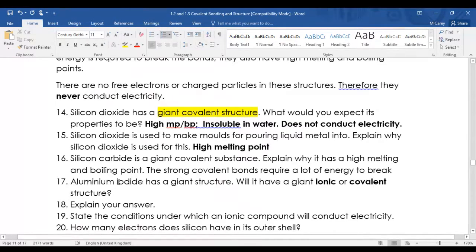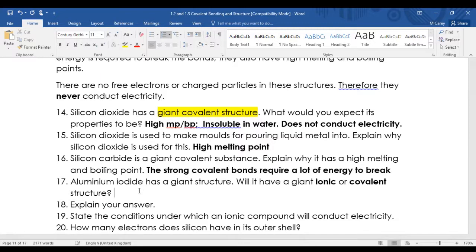Aluminum iodide has a giant structure. Right, aluminum and iodine - that's metal and non-metal, so that's going to be ionic. Because metal non-metal combination. How do you know it was made of a metal and non-metal? You could say it's a metal compound.